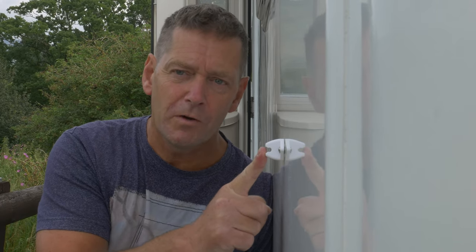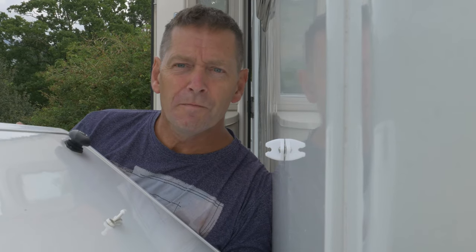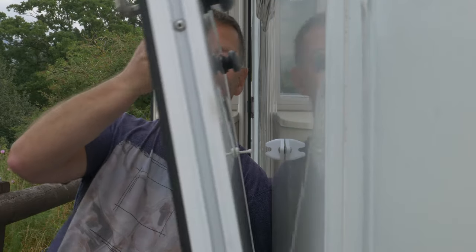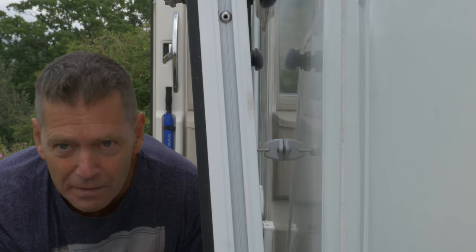So now we've done the female part on the body of the motorhome, the male part is on the locker door that still needs to be done. But when you've replaced that as well, then because you've used the original holes these should line up beautifully and click into place like that. And hopefully this time the locker door is not going to fall on your head when you go rooting in there for something.